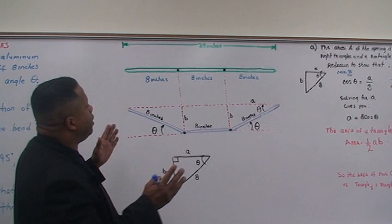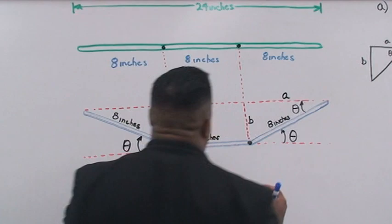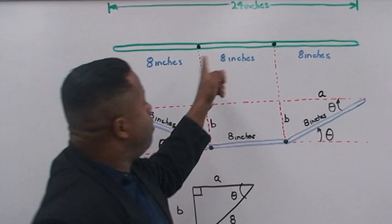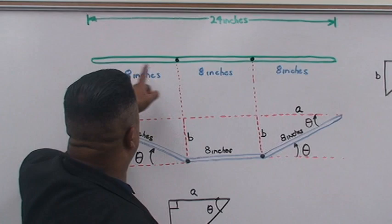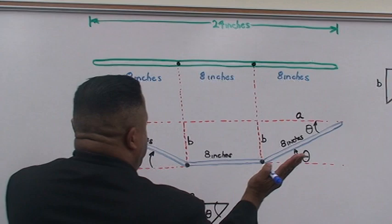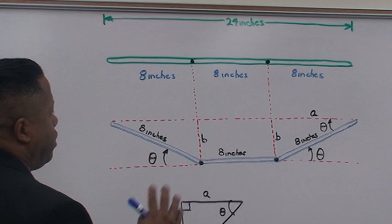So, let's look at the figure right here. Of course, you have this sheet of aluminum that is twenty-four inches wide here. And the contractors want to mark off eight inches from the edge, as you see. Eight inches here, eight inches here, eight inches here. From here to here, from here to here, and also from here to here.